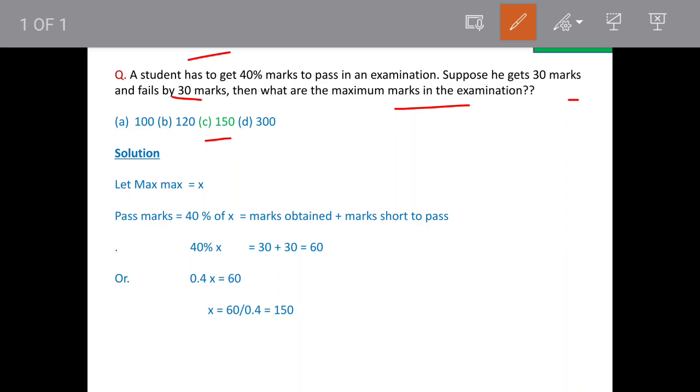Let maximum marks be equal to X. So pass marks are equal to 40% of X as per the question. And pass marks are basically marks obtained by the student and marks by which he has failed. So these are 30 plus 30 is equal to 60.